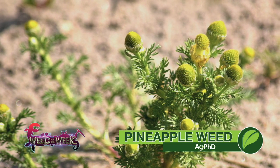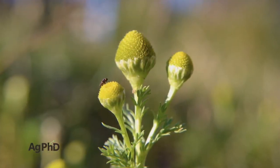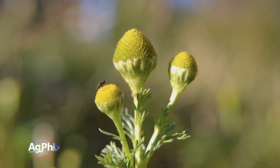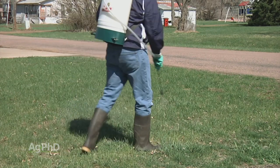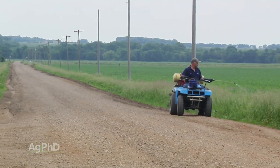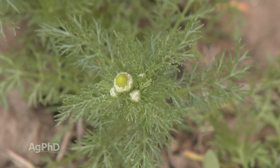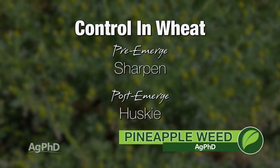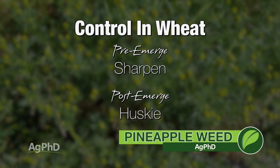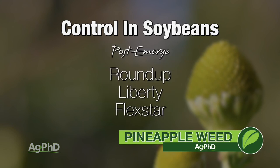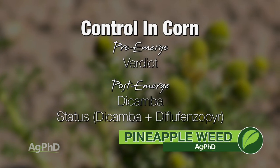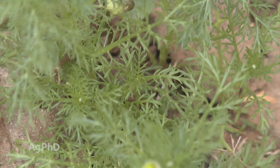Our Weed of the Week is pineapple weed. It's actually one of my favorite weeds to find out there — when the heads get mature and yellow you can squeeze them and it smells like pineapple. The other reason I like this weed is it doesn't compete heavily against our crops. The reason I like it is I can kill it pretty easily. 2,4-D and dicamba around the farmyard in non-crop areas — there's no real big problem here. This is not a difficult weed to control; it's just an annual weed. Most broadleaf herbicides work fine in wheat. Post-emerge in soybeans you can use Roundup, Liberty, Flexstar. Pre-emerge sharpen, valor, or authority works very well. In corn I like dicamba, especially Status. Pre-emerge I like Verdict.